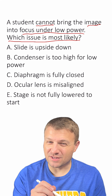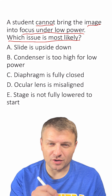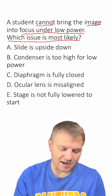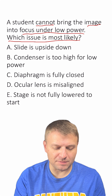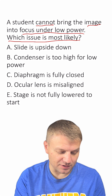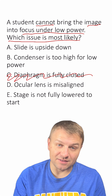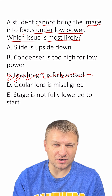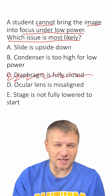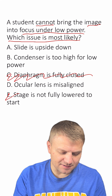So which one of these answers do you think is correct? I'm going to show you the wrong ones first. The diaphragm is fully closed — no, it wouldn't be blurry, you just wouldn't see it. So C is out. E, the stage is not fully lowered to start — no, you usually take the stage all the way up to start. E is out.